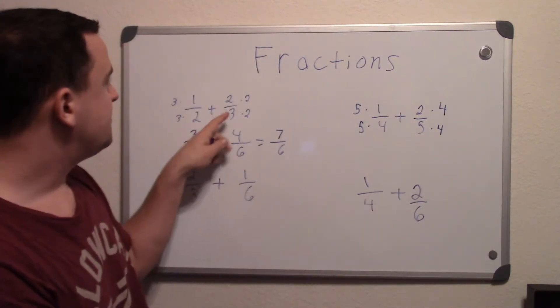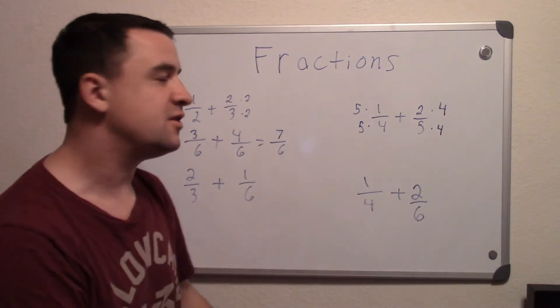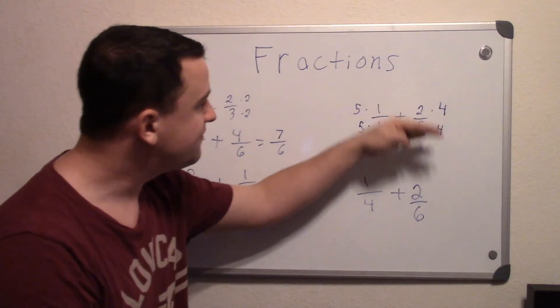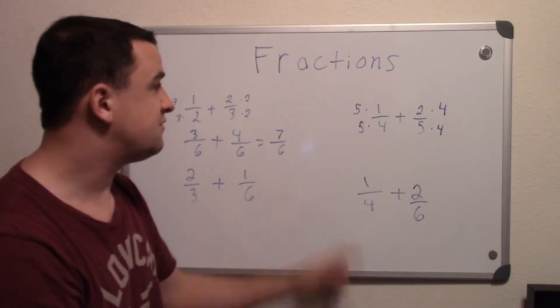And like I was saying over here, again, 5 over 5 is 1, and 4 over 4 is 1. So it's going to be the same fractions, the value's going to be the same, it's just essentially different fractions.